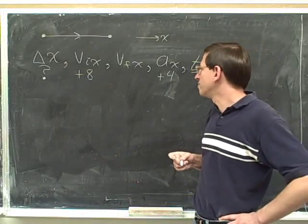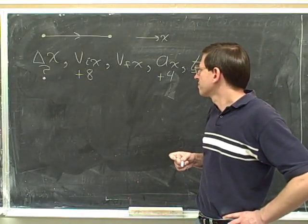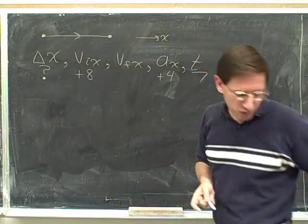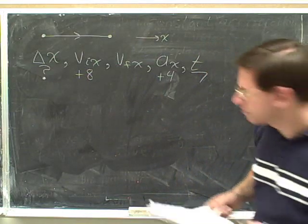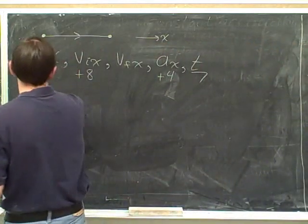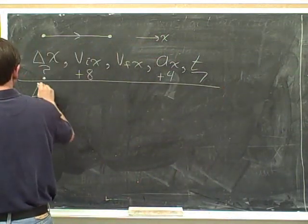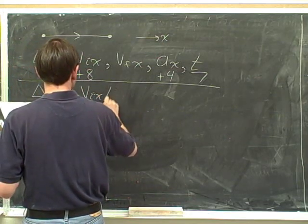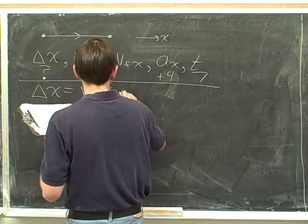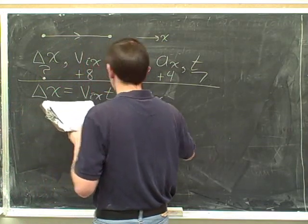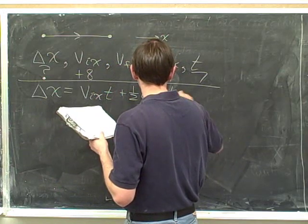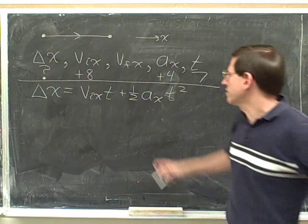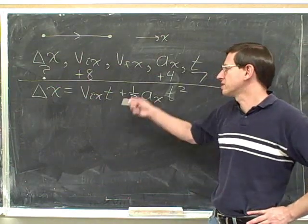Well, what is the variable that is missing? So we want to pick the equation that's missing the final velocity. Well, if you look down that list now, it should be pretty easy to find the red equation. Clearly, this equation is missing the final velocity.